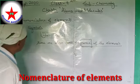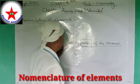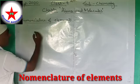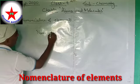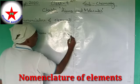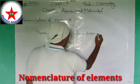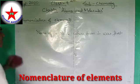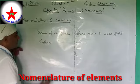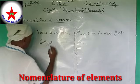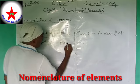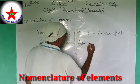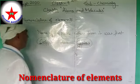The name of an element was taken from either the name of the place where it was first found or discovered. For example, in the case of copper, the name was taken from the place where it was first obtained — a place called Cyprus. So from 'Cyprus,' the name copper was derived.